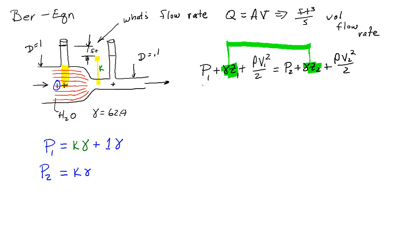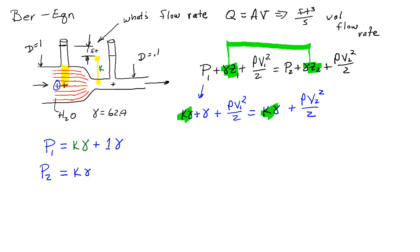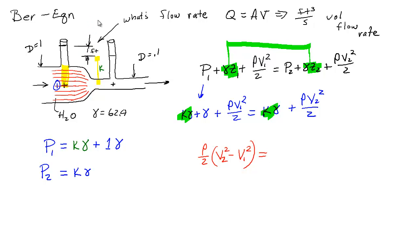Likewise, pressure two is nothing more than Kγ. We don't know what K is, and we really don't care. Substituting into Bernoulli's: Kγ + ρV1²/2 = Kγ + ρV2²/2. The K·γ terms cancel, and we get ρ/2 · (V2² − V1²) = γ. The γ on the right comes from the one-foot difference — if it were two or three feet, we'd have two or three here.